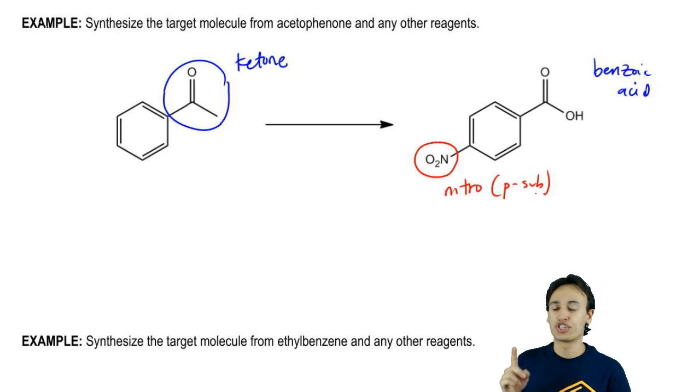One thing that I know for sure is that to put a nitro into the para position, at some point my ketone is going to have to become what? An ortho para director. Right now what type of director is it? Meta.